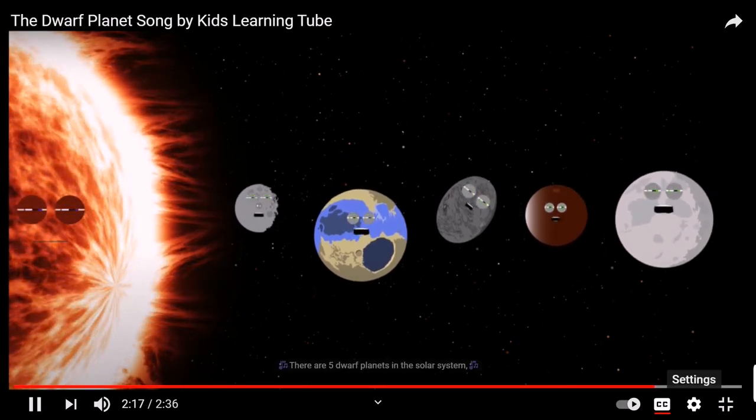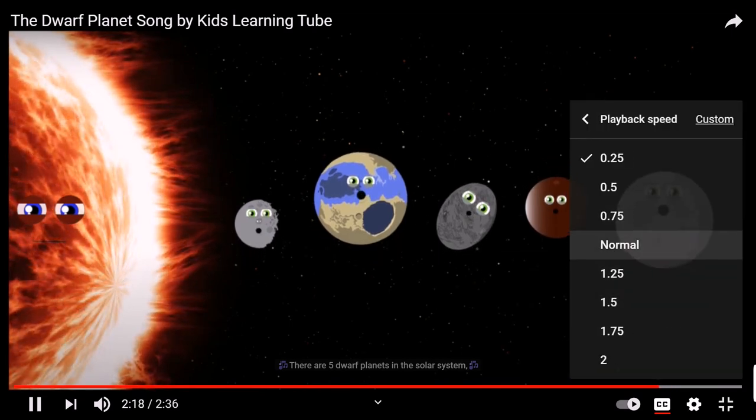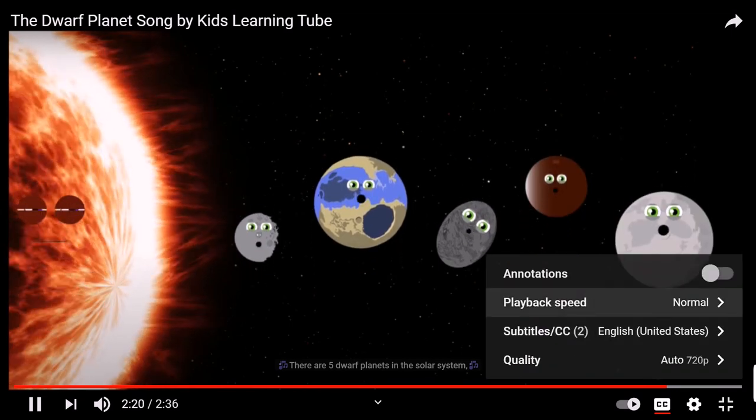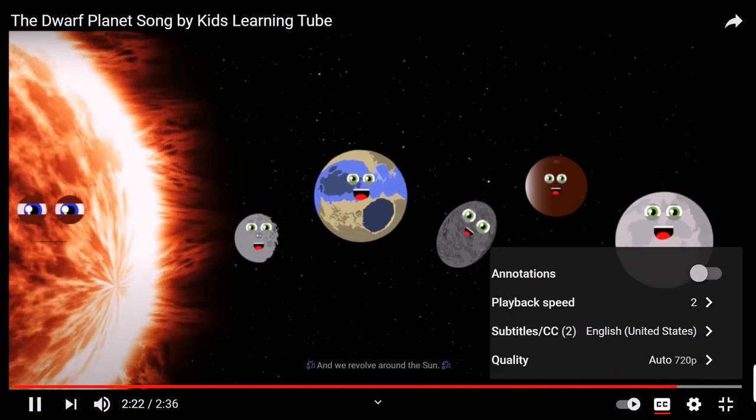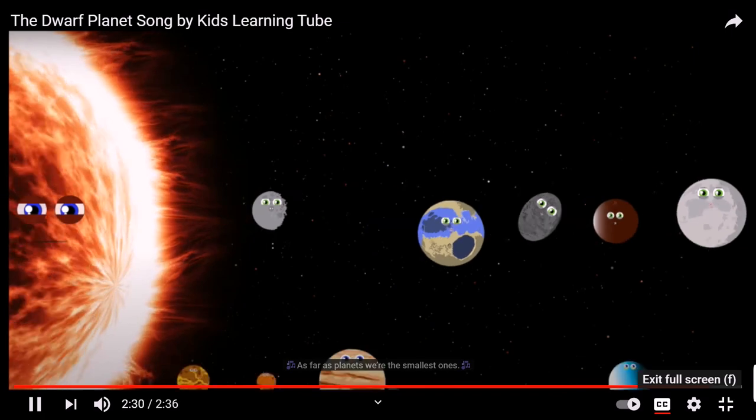There are five dwarf planets in our solar system and we revolve around the sun. Four of us live in the Kuiper Belt. As far as planets, we're the smallest ones.